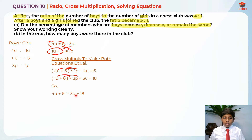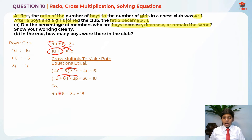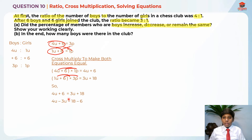I'm going to bring the 3 units to this side of the equal sign. These 3 units originally have a plus in front, so when we bring it to the other side of the equal sign, it gives us a minus. So 4 units minus 3 units. Then I'll bring the 6 to the other side, giving a minus sign, so 18 minus 6. Therefore, 1 unit is equal to 12.